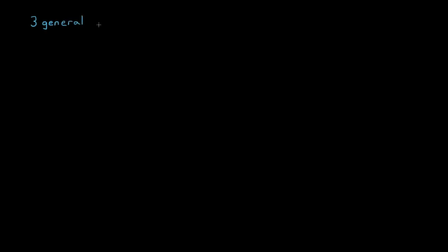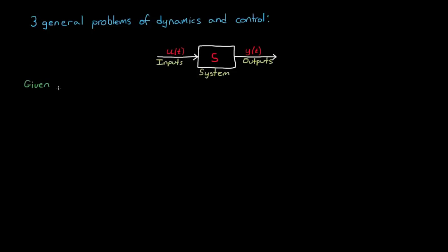System identification is one of three general problems associated with dynamics and control. Let me explain them this way. If you're given an arbitrary system s, and it has inputs u(t) and outputs y(t), then we can state the following. If we know the inputs and we know the system dynamics, then we can find the outputs through simulation. That is, we can predict how the system will behave by playing the inputs through it. That's the first problem.